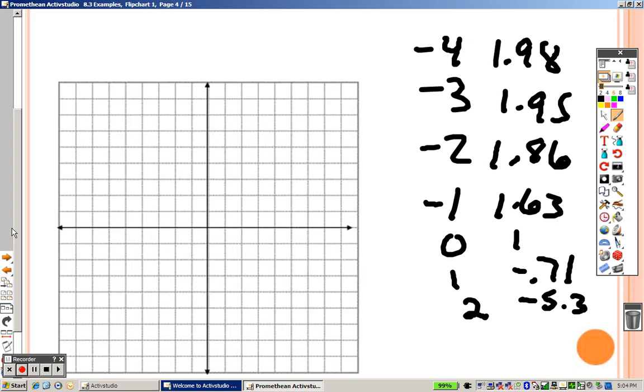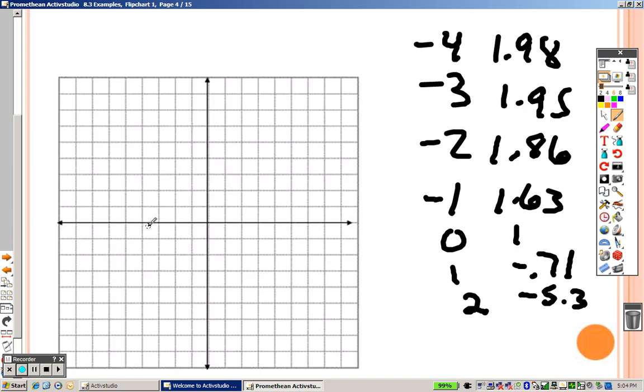The point by all this is, when I go and plot these points, negative 4 and almost 2, negative 3 and pretty close, negative 2 and still pretty close, negative 1 and still pretty close, 0, 1, 1.